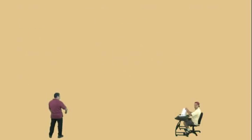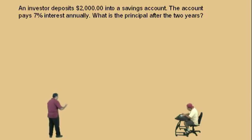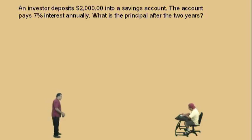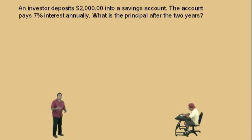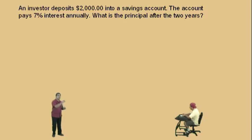Let's do another one. An investor deposits $2,000 into a savings account. The account pays 7% interest annually. What is the principal after two years? Be careful with this one. Notice it's every two years, but there is 7% interest paid annually. That means every year we have to calculate the interest. Because we're putting the money into an account for two years, we have to do two calculations — one after the first year, and then one after the second year.